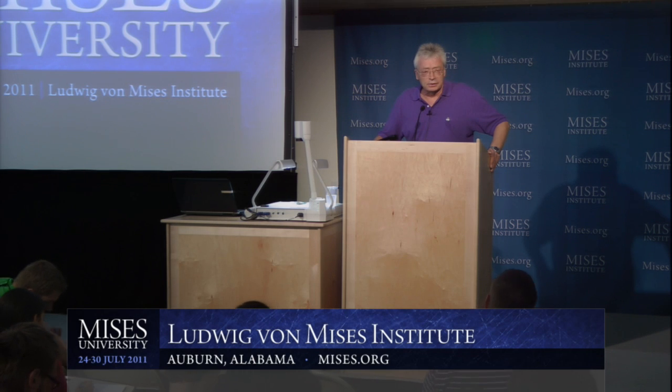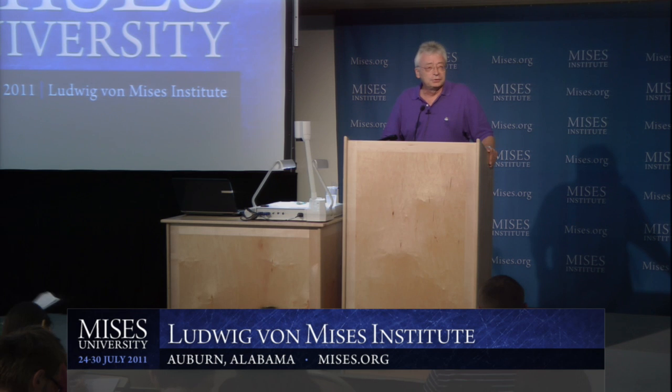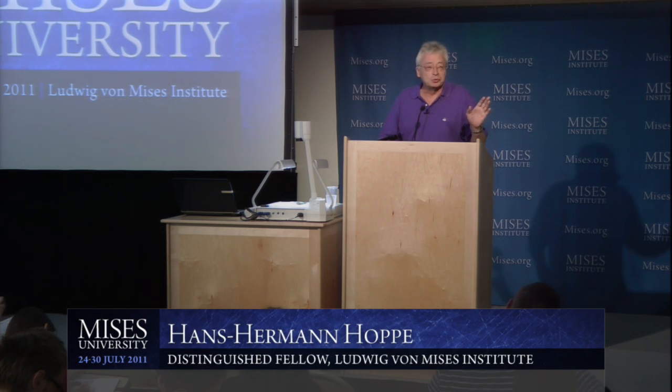I want to talk about the difference between two types of surprises or two types of contingencies. The one type of surprise is what is referred to as risks, and risks we can insure against. And the other type of surprise are uncertainties — uncertain events against which we cannot insure ourselves.